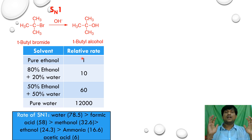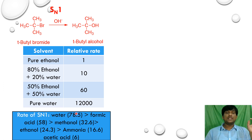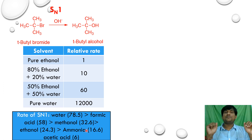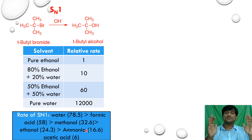Here is a list of polar protic solvents with their dielectric constants: water 78.5, formic acid 58, methanol 32.6, ethanol 24.3, ammonia 16.6, and acetic acid 6. The rate of SN1 reaction is directly proportional to the dielectric constant — as polarity increases, the rate of SN1 reaction increases.